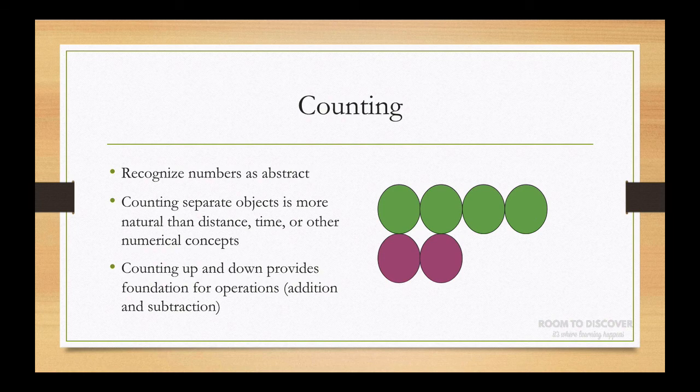Part of the advantage of using visual models is we can use counters and then apply it to other things like number lines where we can see distances. We want to reinforce that numbers are not just objects. They can be distances, times, and some even more abstract concepts.